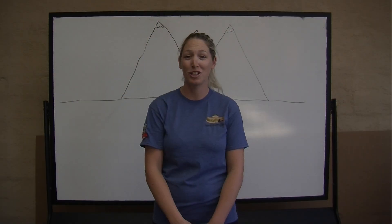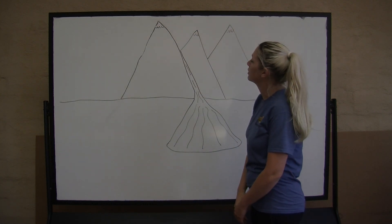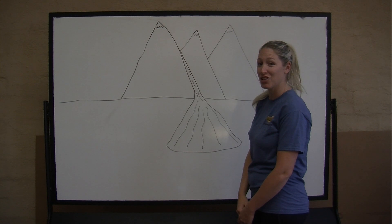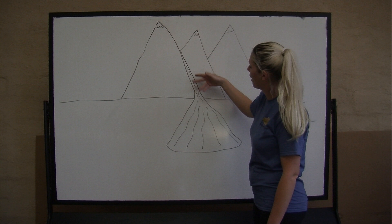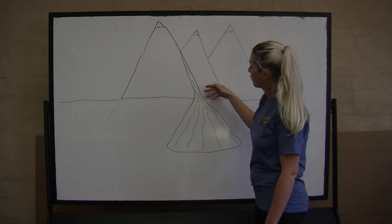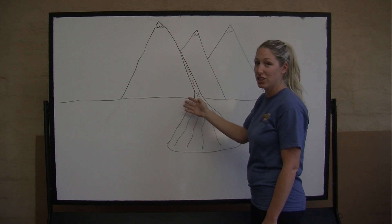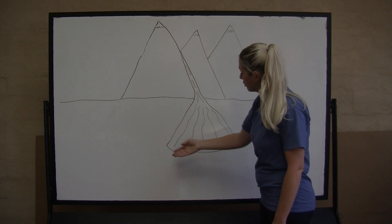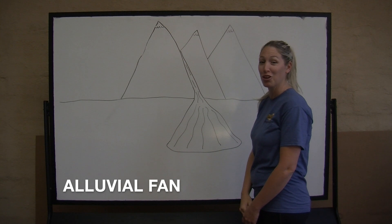How did all this alluvium, also known as sediment, reach the dry lakebed? The steep San Gabriel Mountains, which have been battered by the San Andreas Fault and further eroded by wind and rain, sent sediment flowing down the mountain in stream channels. Once the sediment reaches the bottom of the mountain where it flattens onto the desert, the sediment spreads out into the shape of a fan — thus the name, Alluvial Fan.